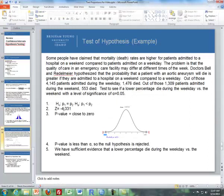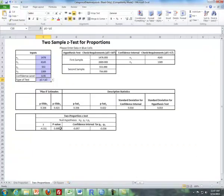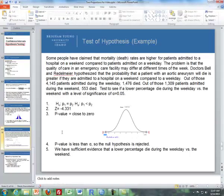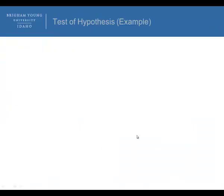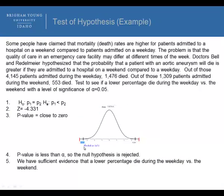So my test statistic is negative 4.331. And so this number here, rounded to three decimal places, is zero, but it's close to zero because it never is zero. Here's an example of what it looks like on the applet here, where I have a negative 4.331. And it's really shaded on the left. You really can't see it because it's so many standard deviations away from the null hypothesis. And so since our P-value is less than alpha, our null hypothesis is rejected. So we have sufficient evidence that a lower percentage died during weekday versus the weekend. So don't get sick on the weekends is the message. But it's based on the results, based on aortic aneurysms, so just be mindful of that.